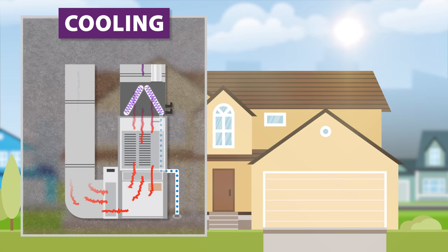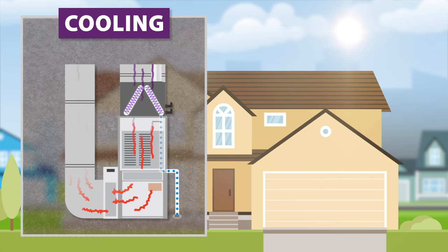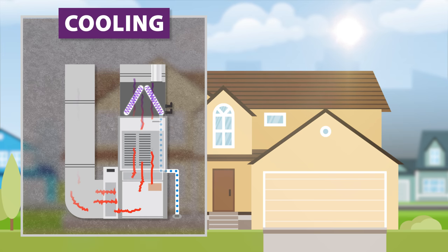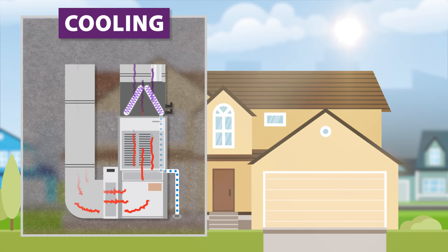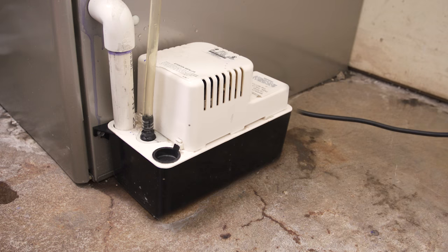Air conditioners not only cool the air in your home, they also remove moisture. This excess water is best removed by gravity through a floor drain. Condensate pumps are used when a floor drain is not practical.